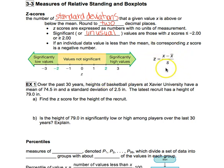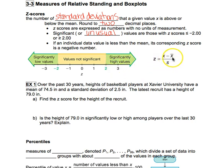This is your formula for finding a z-score. You take the data value you're given, which is x, subtract the sample mean x-bar, and then divide by the sample standard deviation.